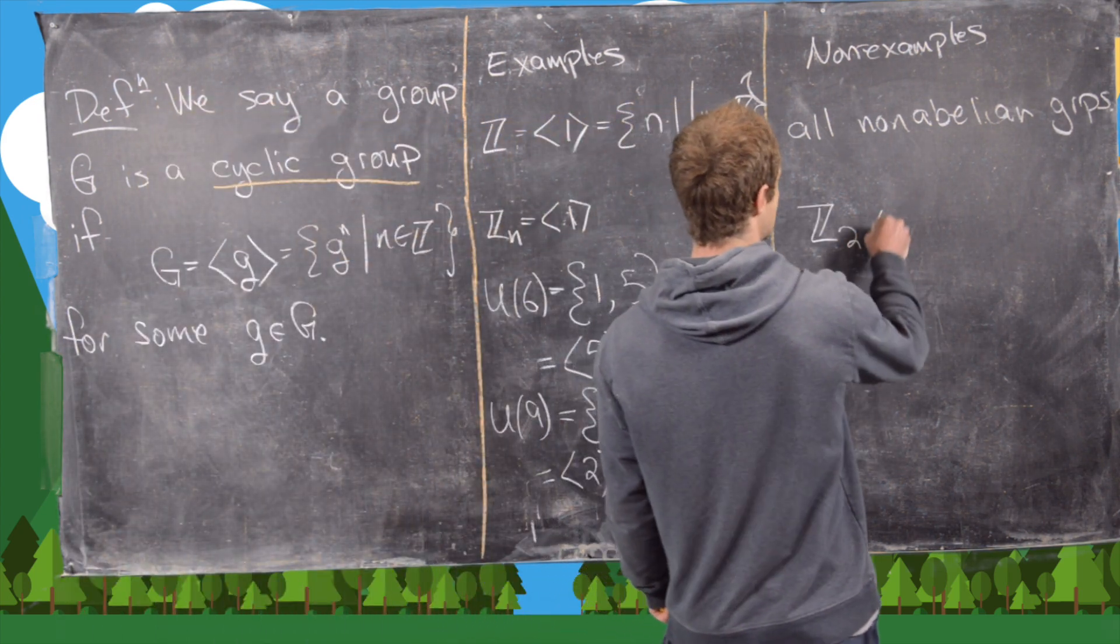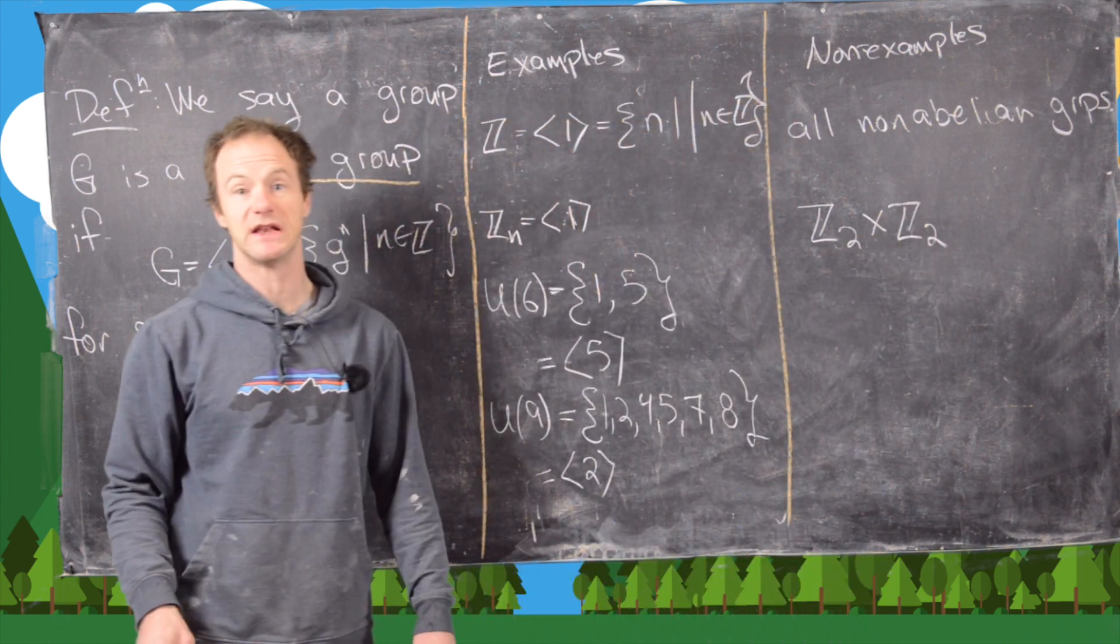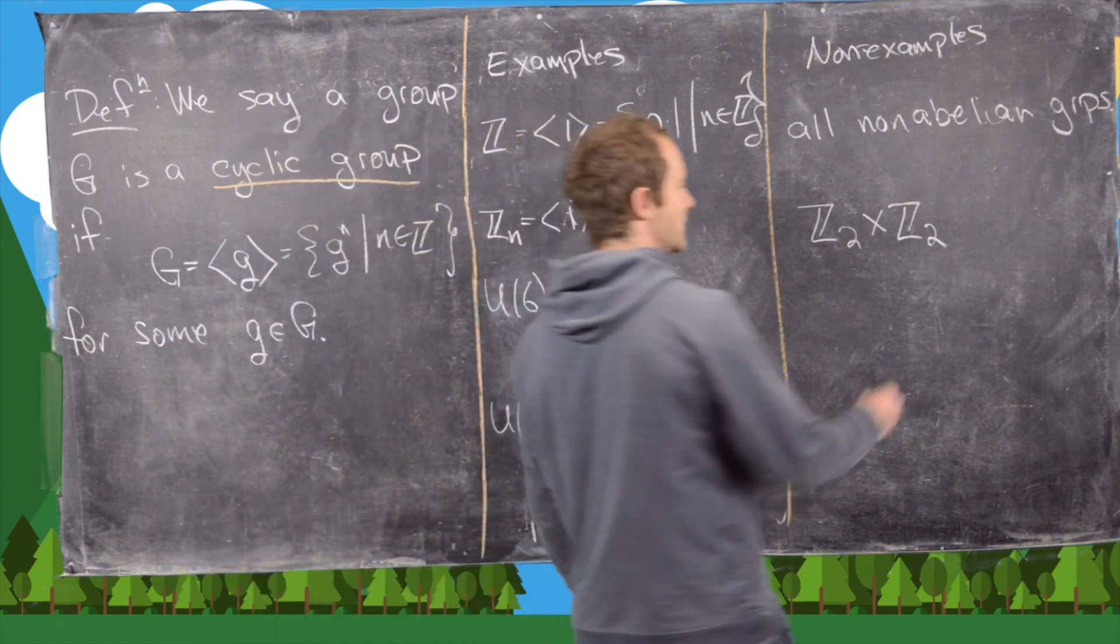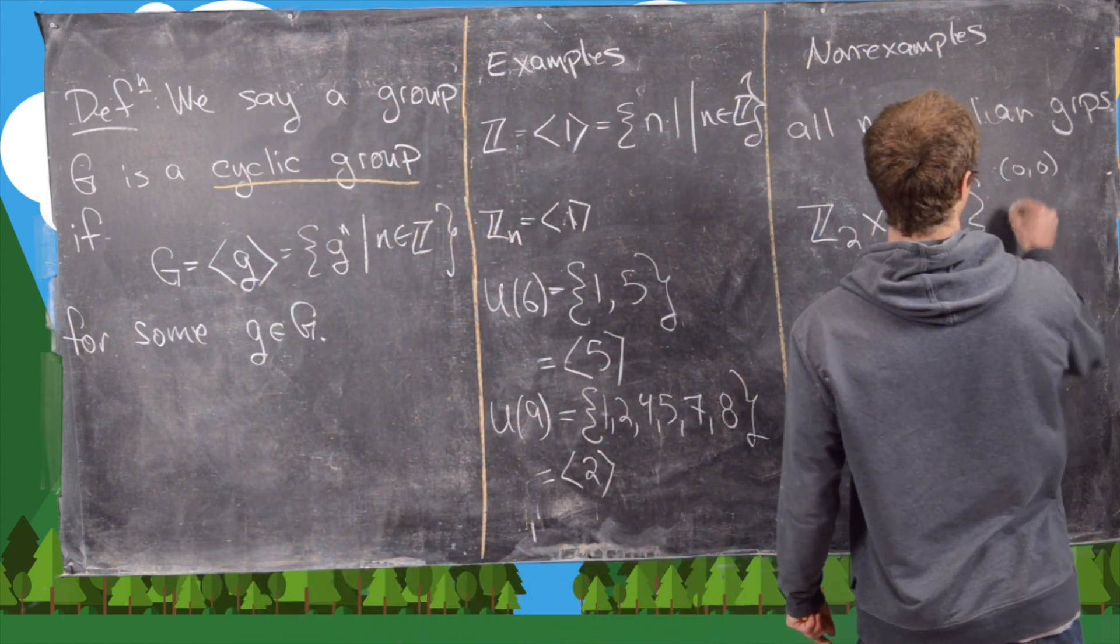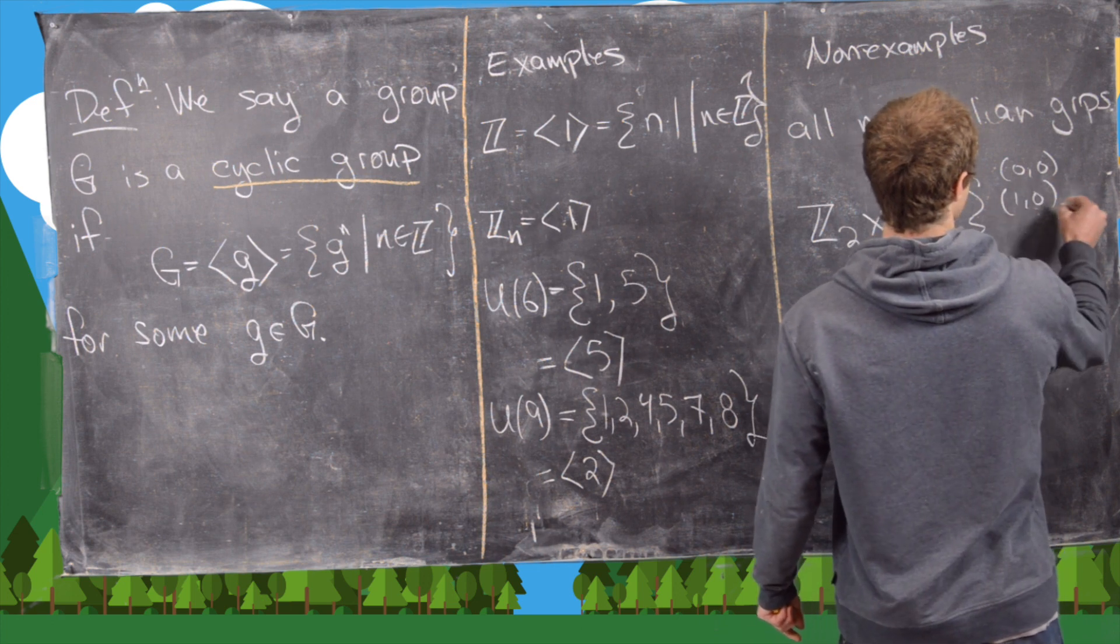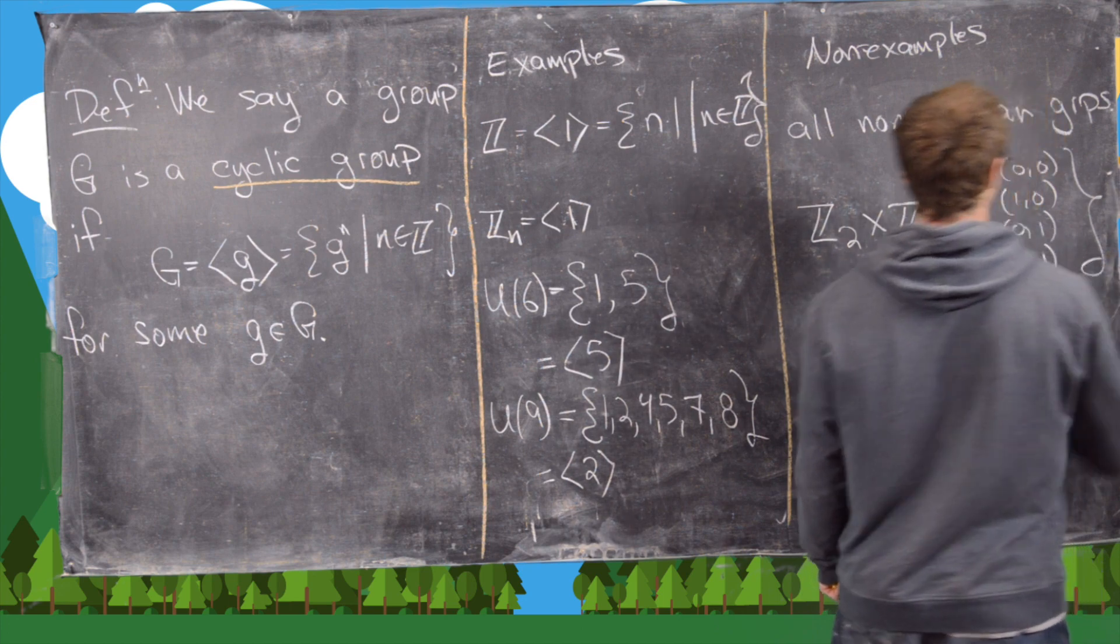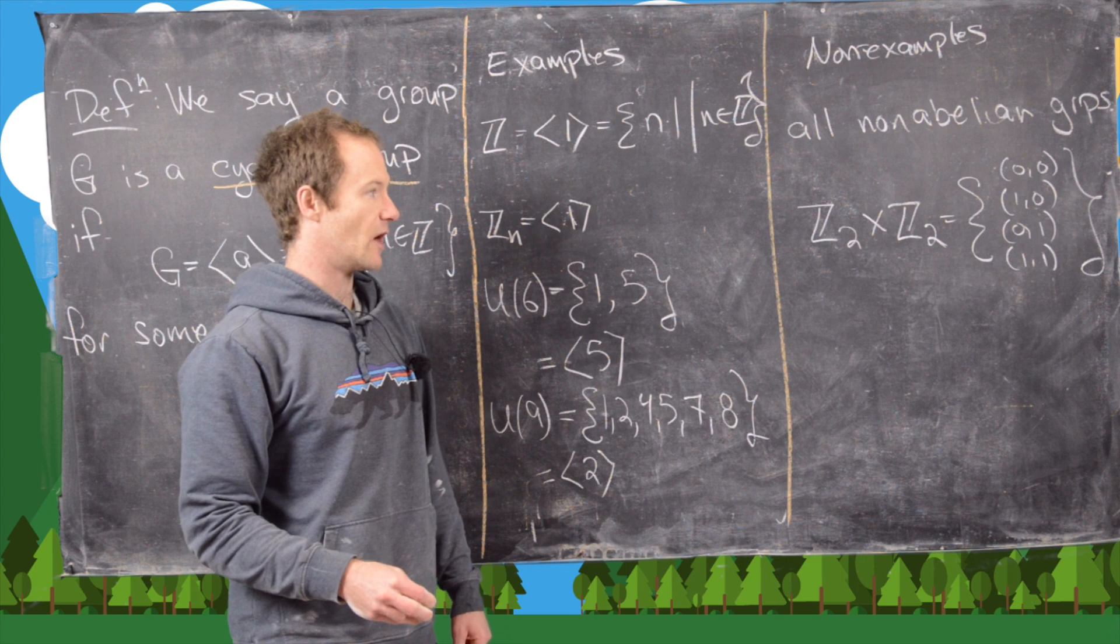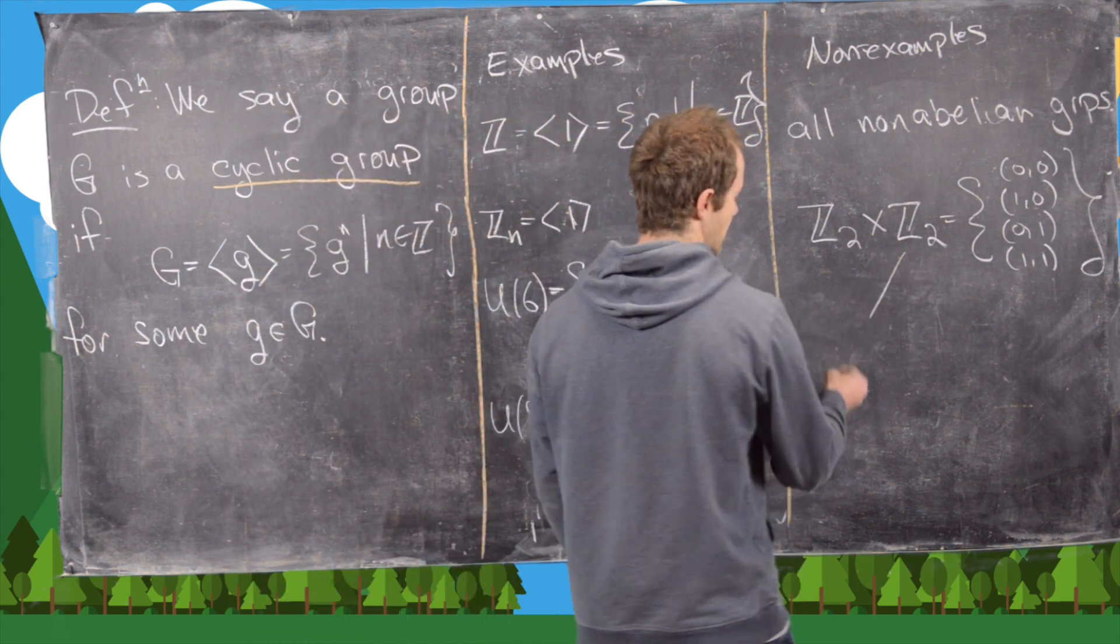Notice we could take things like Z_2 cross Z_2. This is going to be not cyclic and it's also abelian. This is made up of four elements: (0,0), (1,0), (0,1), and (1,1). If we look at the cyclic subgroup of each of those elements, we'll see that we never achieve the whole group. We can do that really quick.